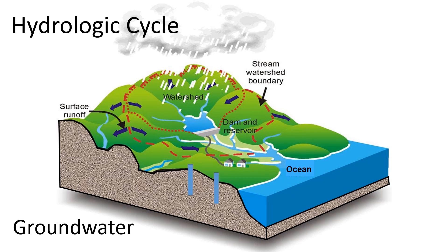Systems that use groundwater by drilling wells into the aquifer benefit from the groundwater recharge that occurs when surface water infiltrates into the ground. The permeability and porosity of the ground will determine both the rate at which water recharges the aquifer and the rate at which it can be removed by a well.